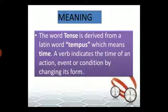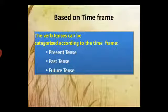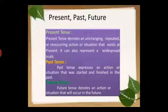Verb tenses can be categorized on the basis of time frame: present tense, past tense, and future tense. Present tense denotes an unchanging, repeated, or reoccurring action or situation that exists at present; it can also represent a widespread or universal truth. Past tense denotes an action or situation that was started and finished in the past. Future tense denotes an action or situation that will occur in the future.